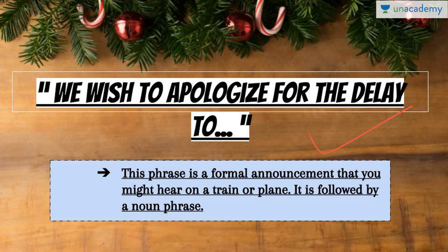Next is 'we wish to apologize for the delay too,' followed by the activity that was delayed. This phrase is kind of an announcement — for example, if you're at an event and some performance gets late, or you are hosting or anchoring a show. It is very formal and very polite. You use it when addressing a group of people, such as at metro stations. It is followed by a noun phrase naming what was delayed.